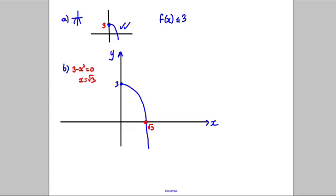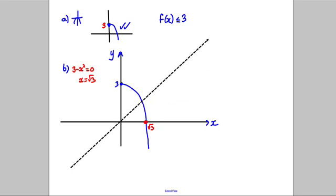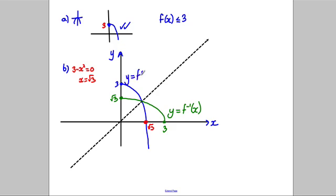Now the inverse function — we should know that the inverse function is a reflection in the line y = x. So this one here will be up at root 3, and this crossing point will be over at 3. The reflection will look something like that. This is the graph y = f⁻¹(x), and this blue graph here is y = f(x). Notice they meet at a point where f(x) equals its inverse function.